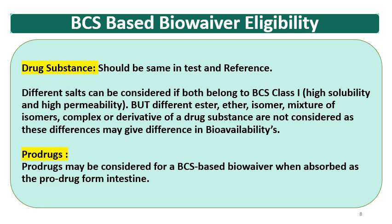In detail, the drug substance should be the same in the test and reference. Different salts can be considered if both belong to BCS class 1 (high solubility and high permeability). However, different esters, ethers, isomers, mixtures of isomers, complexes, or derivatives of the drug substance are not considered, because these differences may result in different bioavailabilities. Prodrugs may be considered for BCS-based biowaiver when they are absorbed as the prodrug from the intestine.